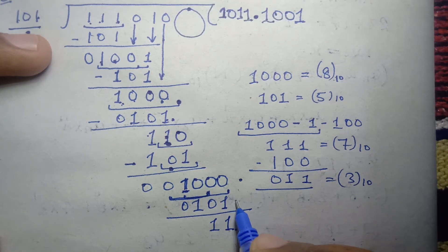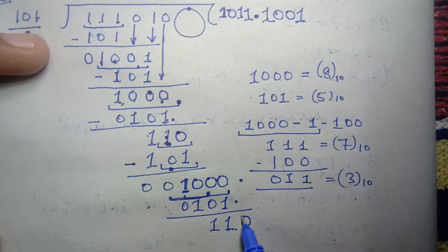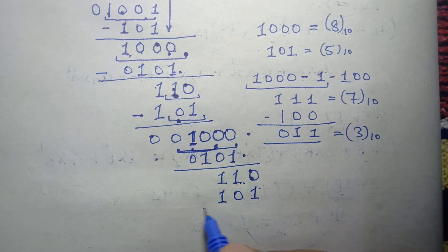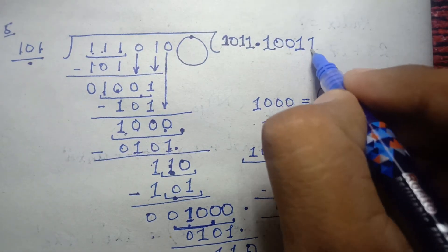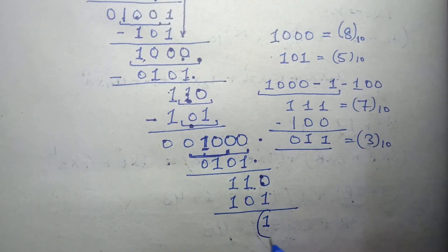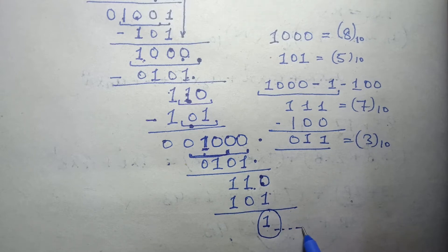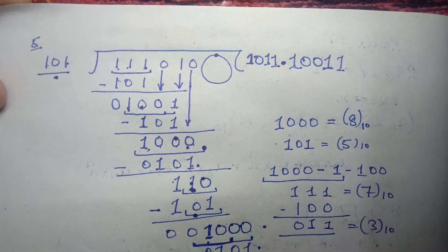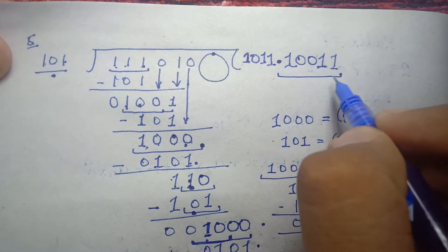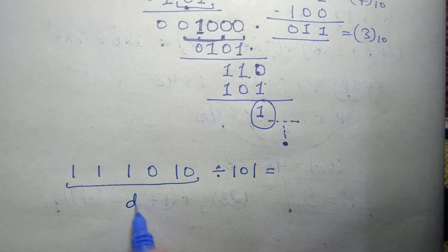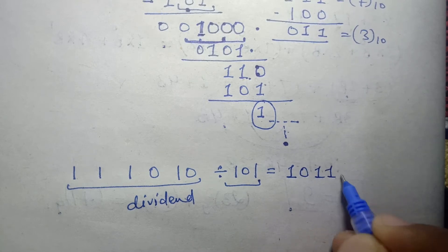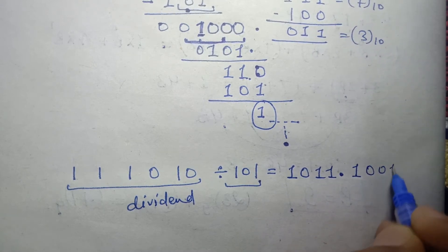Continuing: difference of 3 in decimal; bringing down another zero gives a value that goes once into the divisor, difference is 1. We are still getting a remainder, so we can stop here or continue to more decimal places. We will stop at five decimal places. The dividend is binary 101 and the divider is binary 111, and the quotient is 1011.11100011 (approximately).